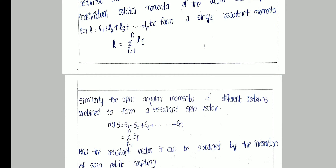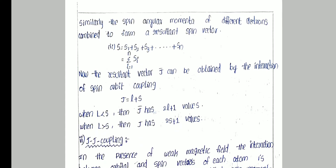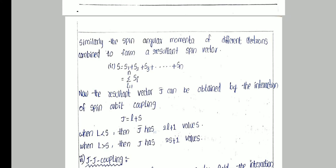The total spin momentum S = S1 + S2 + S3 + ... + Sn. Now the resultant vector J can be obtained by the interaction of spin-orbit coupling: J = L + S. When L is less than S, then J has 2L+1 values. If L is greater than S, then J has 2S+1 values.